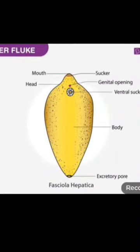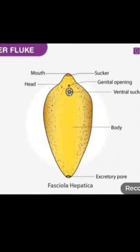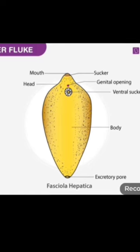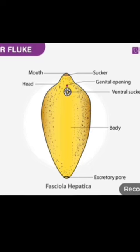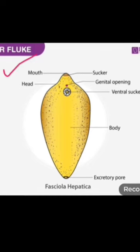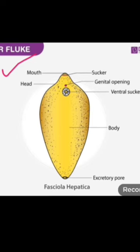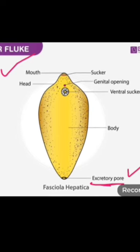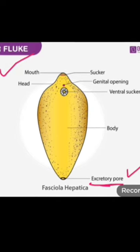Before going into the detail of the life cycle, you must have to know its general structure. If you look at the picture, you can clearly see that the mouth end is present at the anterior side, while the excretory pore is present at the posterior side.